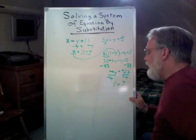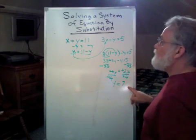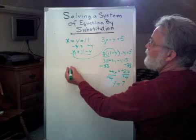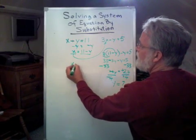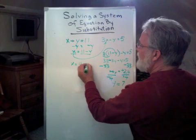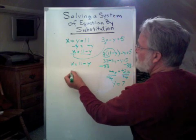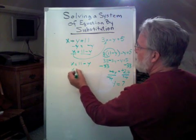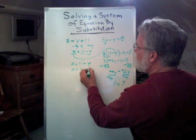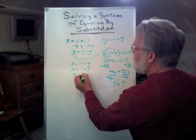Now I'm going to take this y equals 7 and find out what my x is. I've already said that x equals 11 minus y, and y equals positive 7. So x equals 11 minus 7. x, therefore, equals 4.